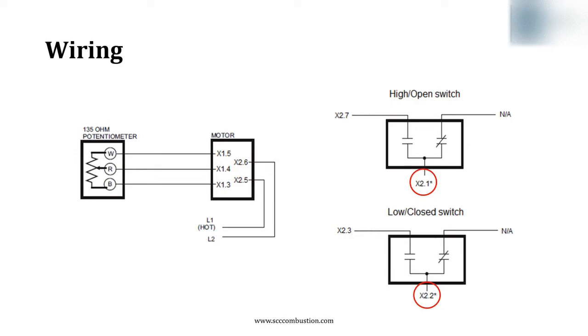Note the asterisks shown on X21 and X22. If 120V is applied to either of these terminals, the actuator will be driven high or low, overriding the modulating control signal. These are not dry contact switches like you may be familiar with, but work very easily once you understand how to use them.